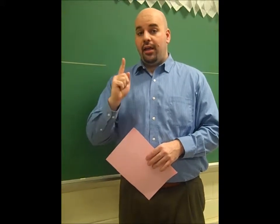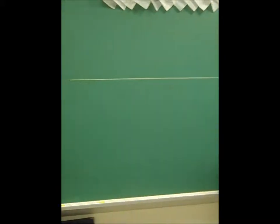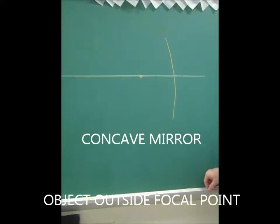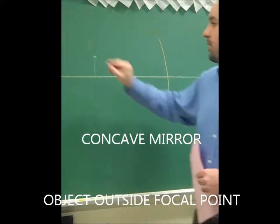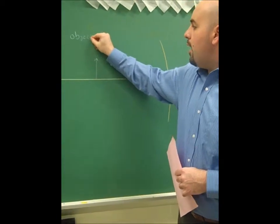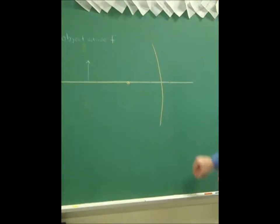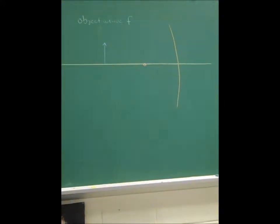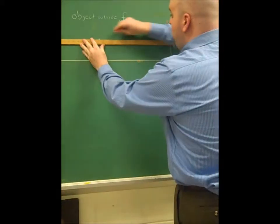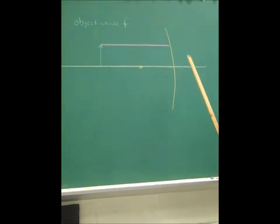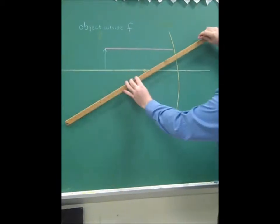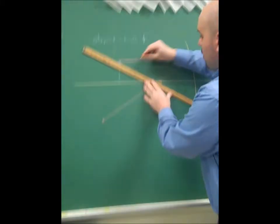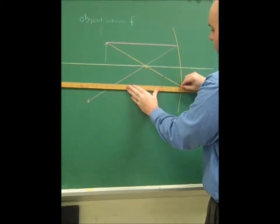Situation number one: concave mirrors. Take a look at this principal axis. I'm going to draw my concave mirror here, and I'm going to draw a focal point. And now I'm going to draw my object outside the focal point. The first light beam is going to go from the tip parallel until it hits the mirror. When it hits the mirror, it's going to reflect, because of the shape of the mirror, through the focal point. The second light ray is going to go from the tip through the focal point until it hits the mirror and reflect parallel straight back.